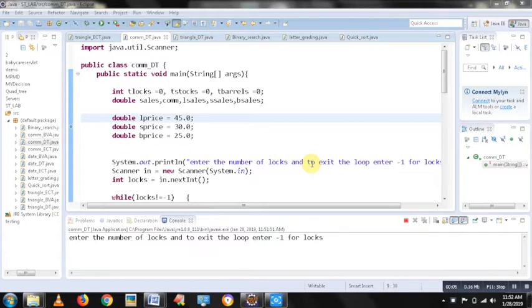Program 9, Commission Program, Data Flow Testing. So here we have to implement the commission program and do a white box testing, specifically data flow testing on the commission program. Let us see the logic of commission program.